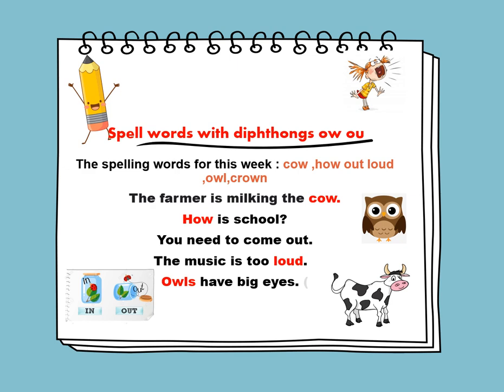The farmer is milking the cow. How is school today? You need to come out. The music is too loud. Owls have big eyes. The queen is wearing a crown.